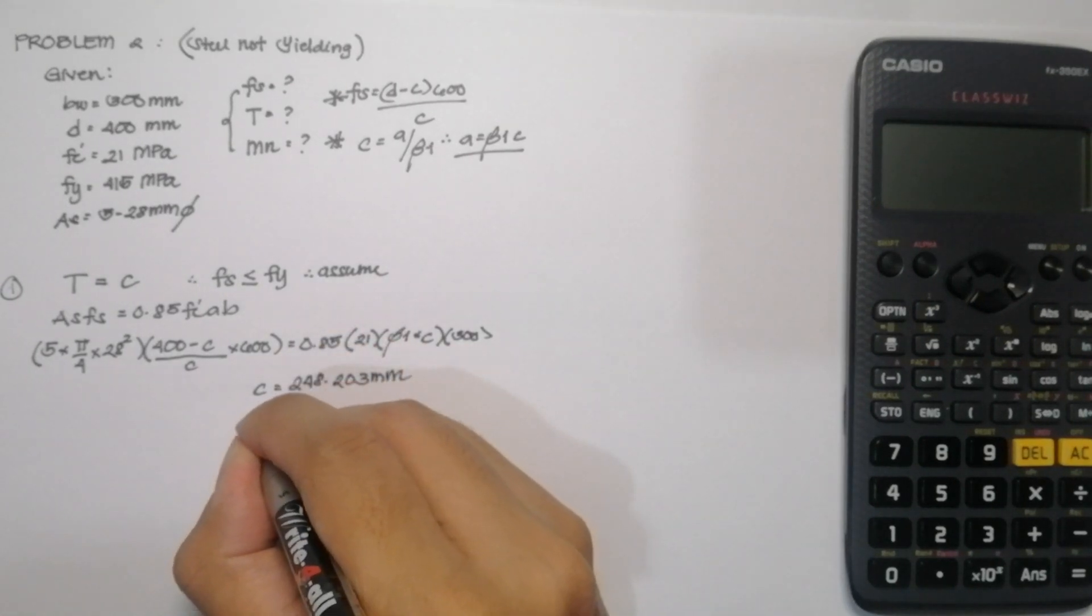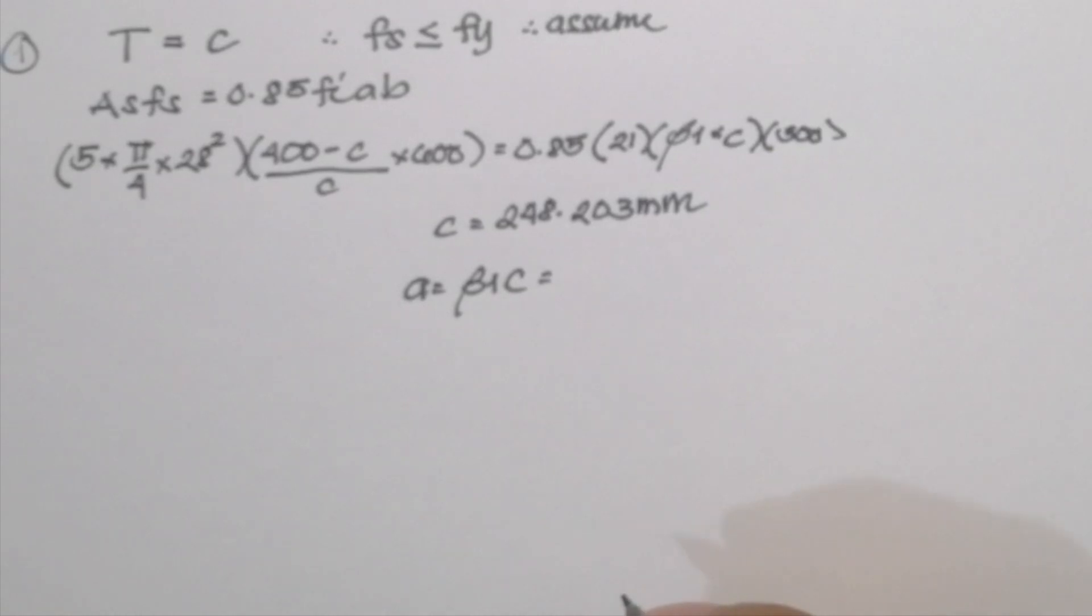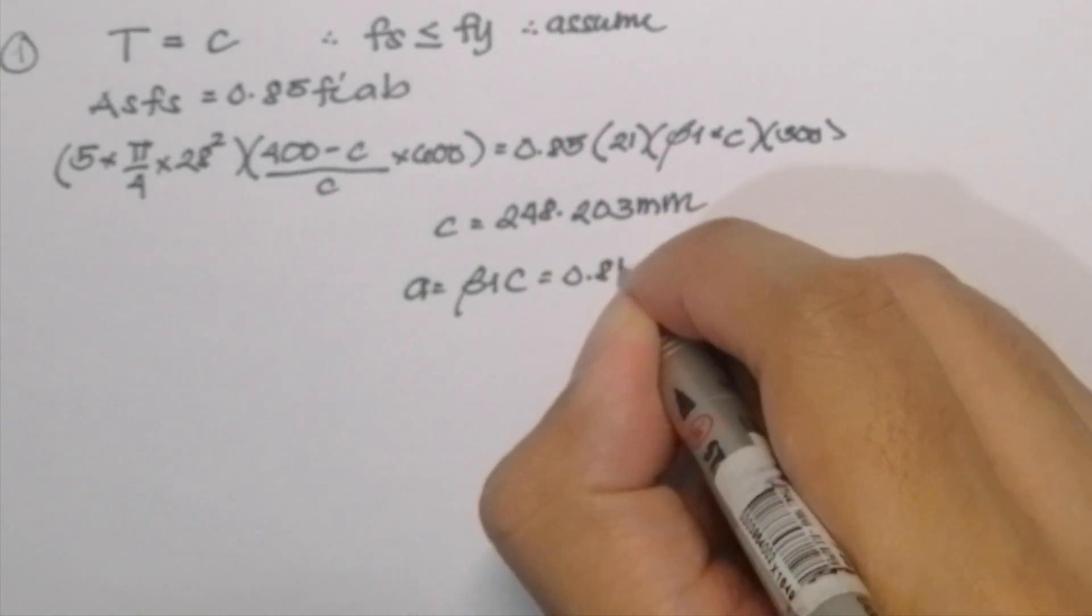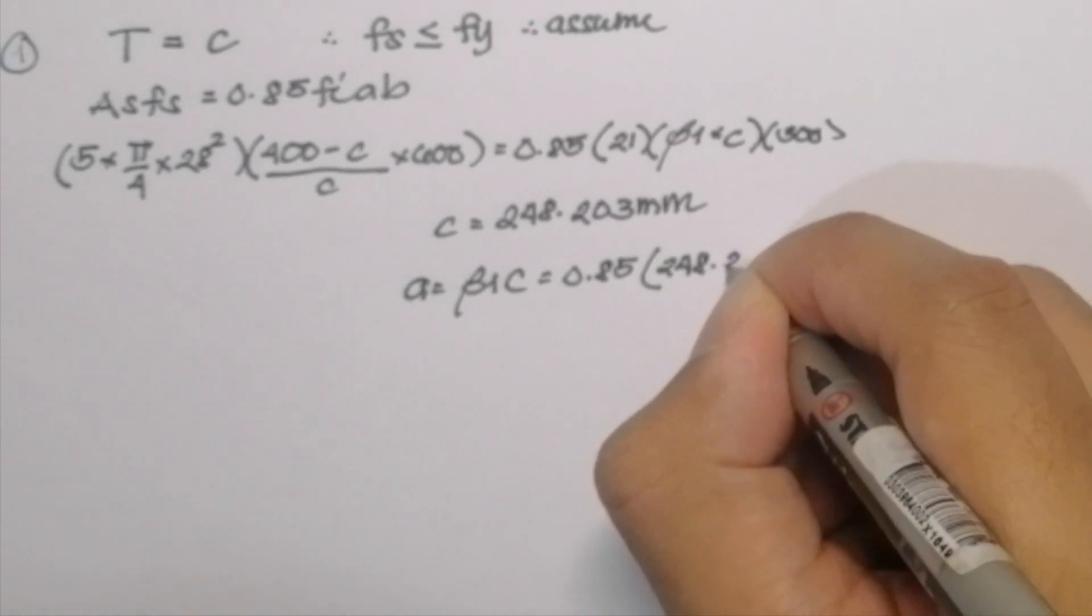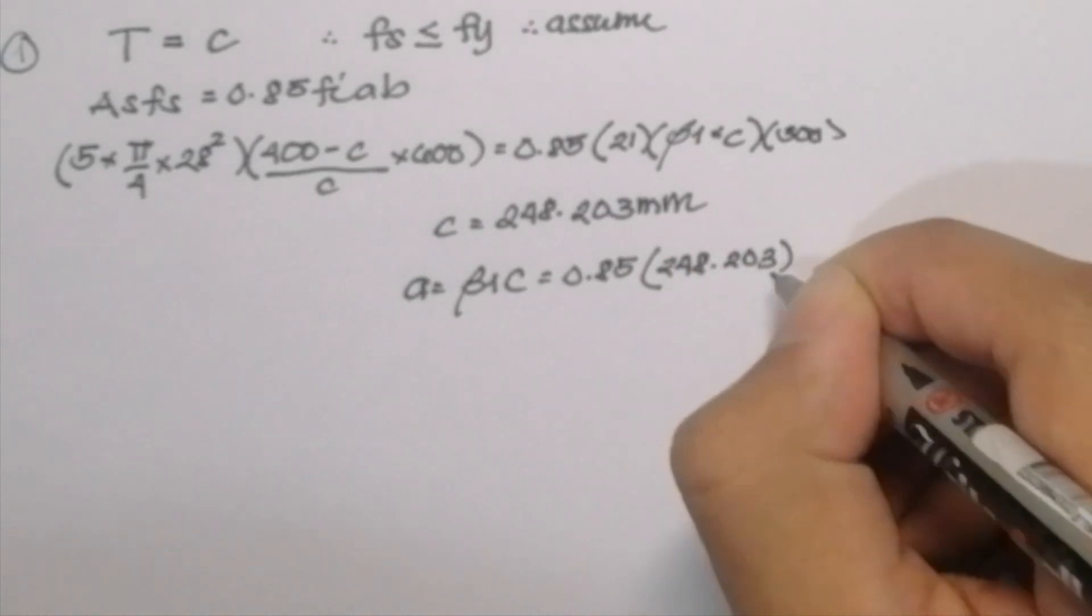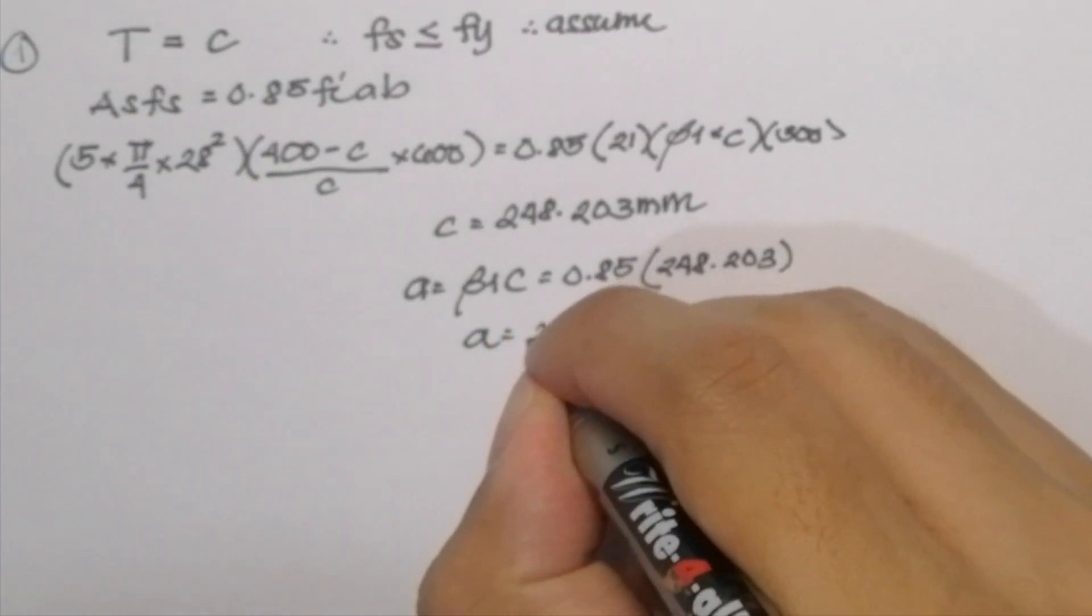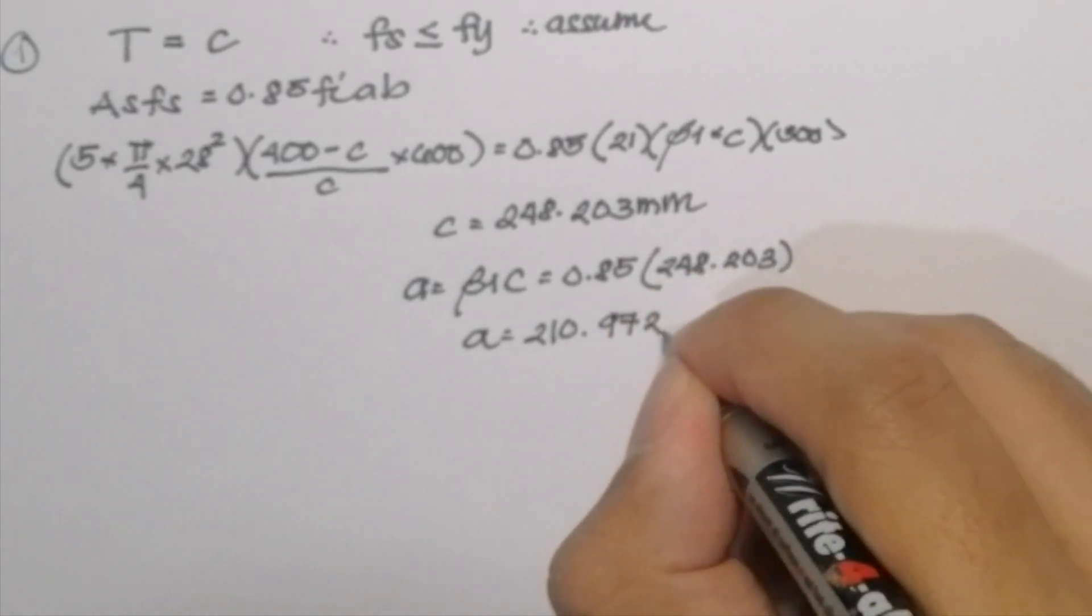Now we are going to solve for A, in which it can be solved by beta 1 multiplied by C. So our beta 1 is obviously 0.85 since our compressive strength is less than 28 MPa multiplied by C, 248.203 millimeters. And our value for A or the depth of the compression block is 210.972 millimeters.